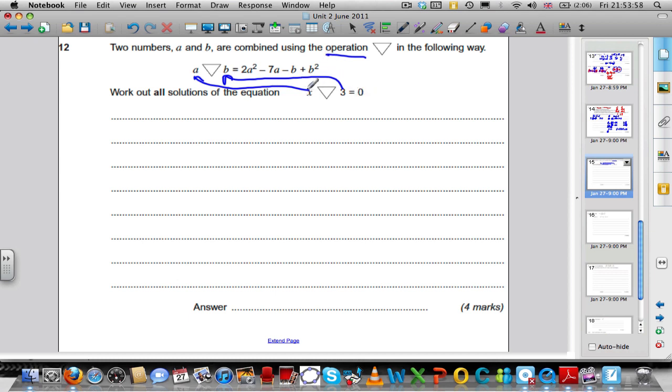So it tells us if X triangle 3, X triangle 3 must be 2X squared, minus 7X, minus 3 because B is 3, and plus B squared which is 9, plus 3 squared which is 9.